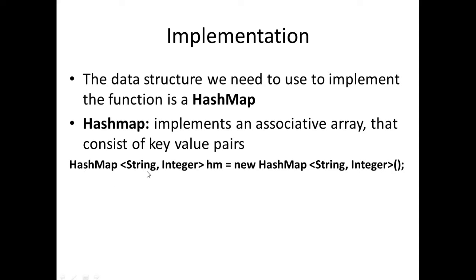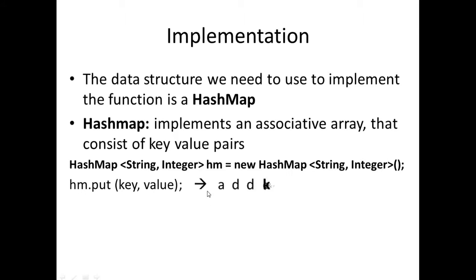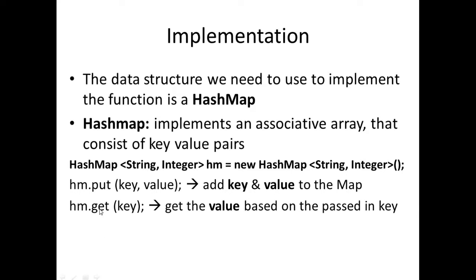We have the HashMap object with two data types: a String and an Integer. The String is going to be associated with the value passed into the count method, and the Integer is going to keep track of the count. When dealing with HashMaps, there are two methods to consider: the put method, which takes in a key and a value and adds an element to the HashMap.